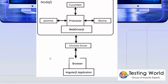Next we need to understand this architecture diagram. Here we have Protractor, which can easily integrate with Cucumber, Jasmine, Mocha, or any other JavaScript framework. Protractor is a wrapper over WebDriverJS, so internally it uses WebDriverJS. WebDriver integrates with the browser through ChromeDriver, which is a plugin we need to set up. So internally, Protractor also does the same thing — it communicates with the browser through ChromeDriver and can automate both simple web-based applications and AngularJS applications.